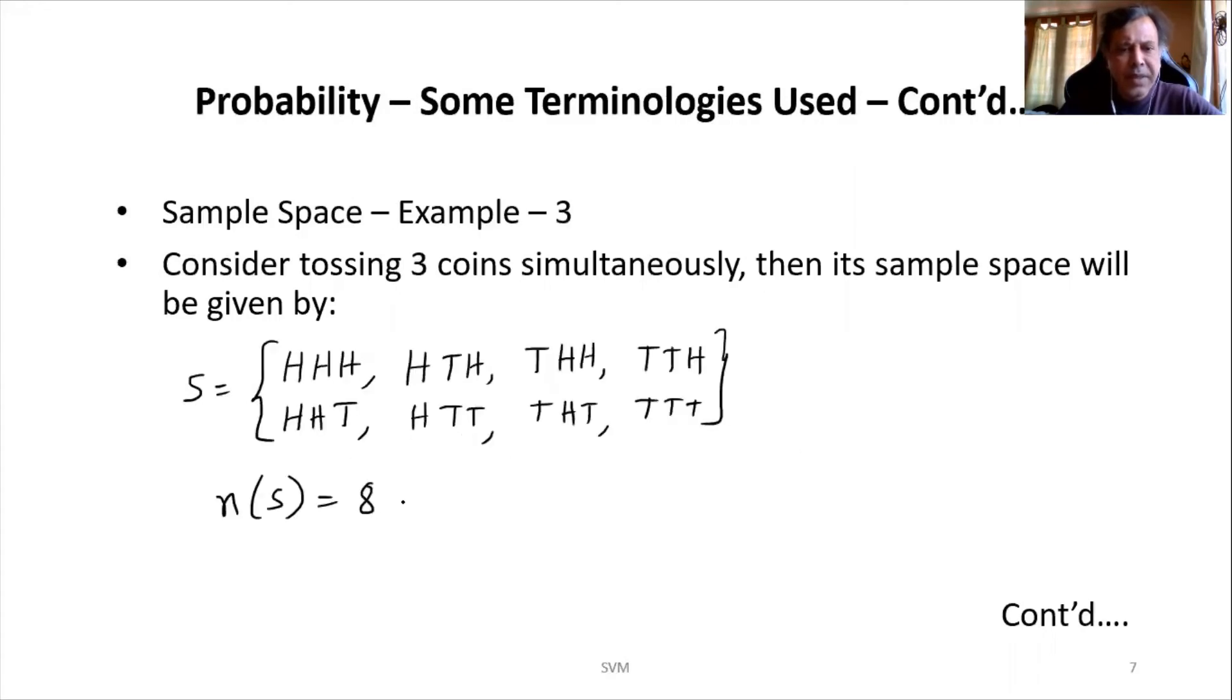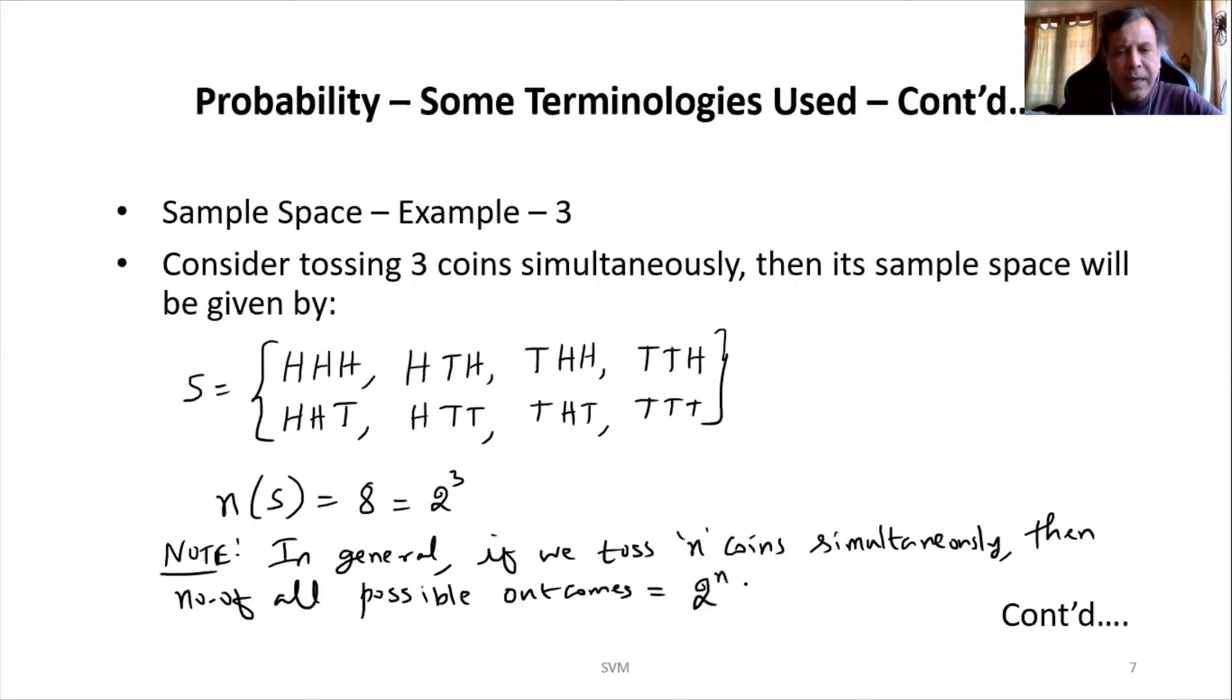So I can write this as: this 2 can be expressed as 2 to the power of 1, and this 4 can be expressed as 2 square. This can be written as 2 cube. So I can say in general, note: in general, if we toss n coins simultaneously, then the number of all possible outcomes will be 2 to the power of n. So we are trying to generalize it.